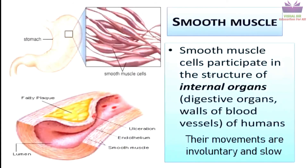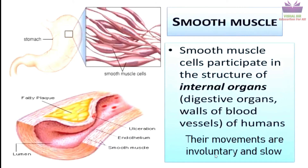Next is the smooth muscle. Smooth muscles form the internal organs. You can see the stomach and the muscles of the stomach in this picture, and also the smooth muscles surrounding the blood vessels. Their movement is involuntary and slow. The muscles present in the intestines and other internal organs — except the heart — are smooth muscles. They are involuntary and not in your control.